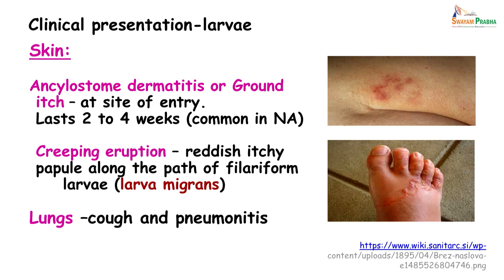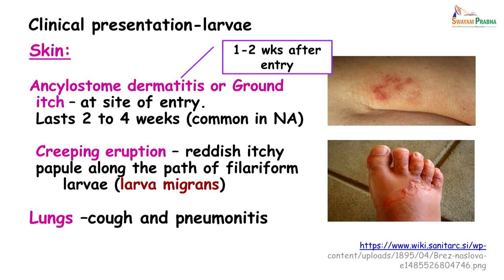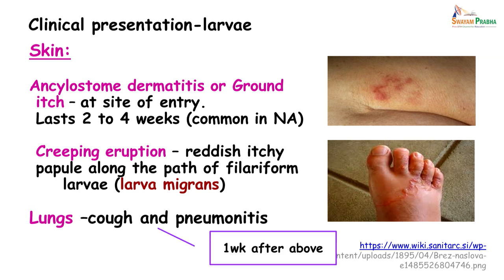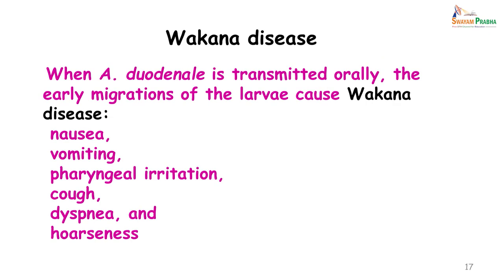After producing skin lesions 1 to 2 weeks after entry, the larvae burrow deeper into the subcutaneous venules, travel to the heart and then to the lungs, where they produce cough and pneumonitis due to tracheal irritation — this happens about 1 week after the skin symptoms. Wakana disease is characterized by nausea, vomiting, pharyngeal irritation, cough, dyspnea, and hoarseness of voice, and is seen with Ankylostoma duodenale.